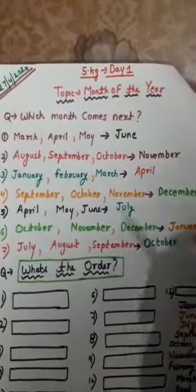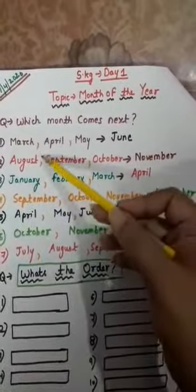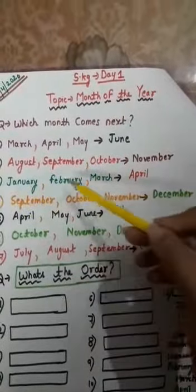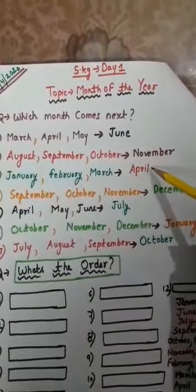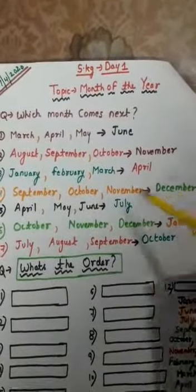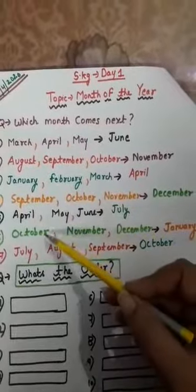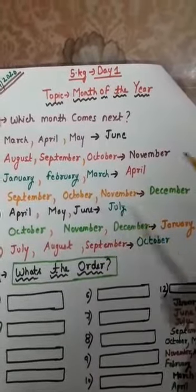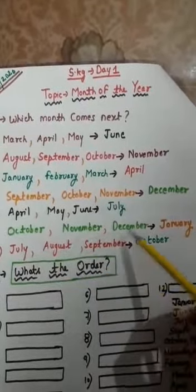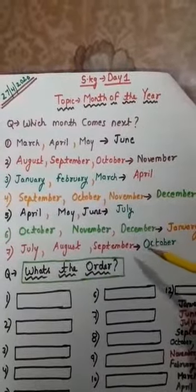Now let me fill this exercise. March, April, May, June, then August, September, October, November. Then January, February — after February, March — after March comes April. Then September, October, November, December. After December comes January. Then July, August, September, October. So this is the sequence — what comes next means which month comes immediately after.